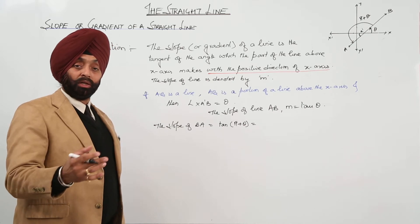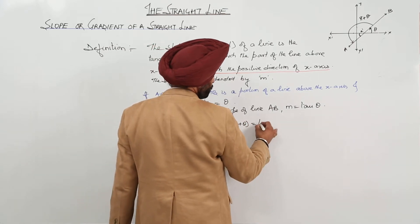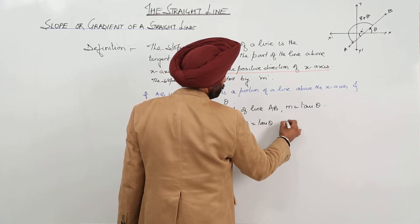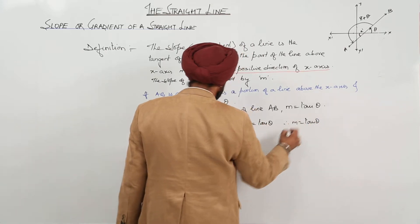Pi plus theta means what? In the third quadrant, tan is what? Positive. So, this becomes tan theta. Therefore, M is equal to tan theta.